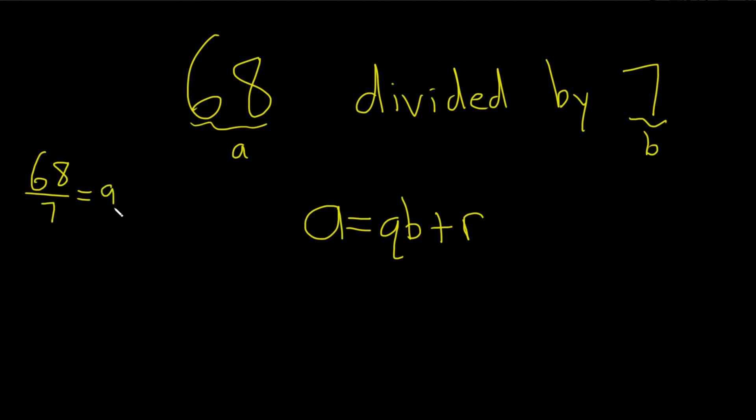I got 9.714, etc. It keeps repeating. Then you want to round down, always. Round down to the next whole number, no matter what.